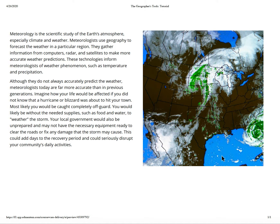Meteorologists predict the weather. If you ever watch the news or the weather, or if you've got the weather app, these guys study the weather. It's a scientific study of the Earth's atmosphere, especially the climate and weather. They use geography to forecast weather in a particular region, gathering information from computers, radars, and satellites to make more accurate weather predictions. These technologies inform meteorologists of weather phenomena such as temperature prediction, although they do not always accurately predict the weather.